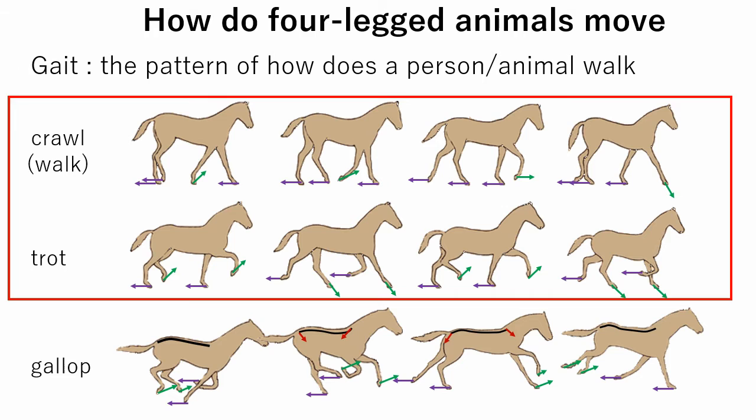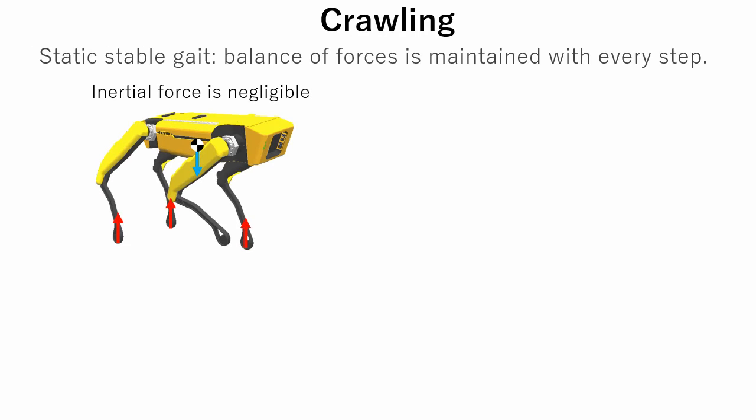In this tutorial, for a quadruped robot we will cover crawling and trotting. Now let's take a closer look at crawl gait. Crawling is a static stable gait. Inertial forces are negligible, and balance of forces is maintained with each step. This means that the robot can stop at any time without falling.